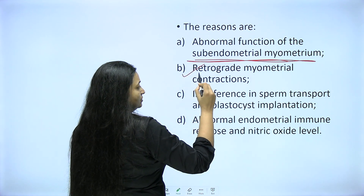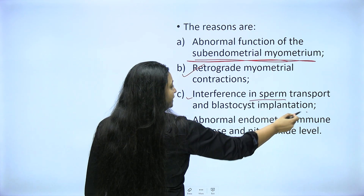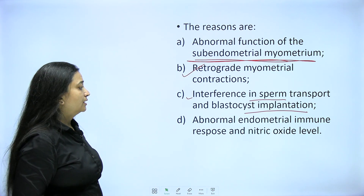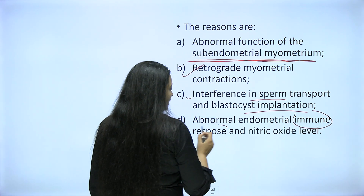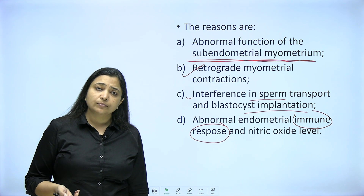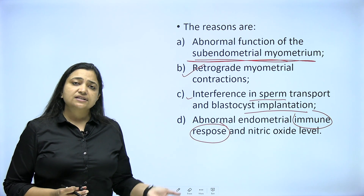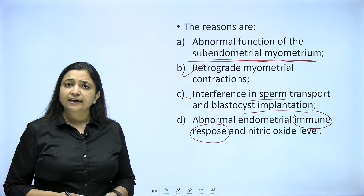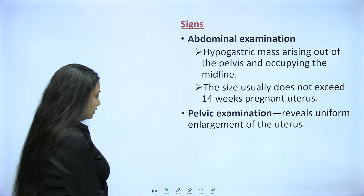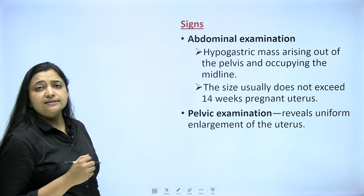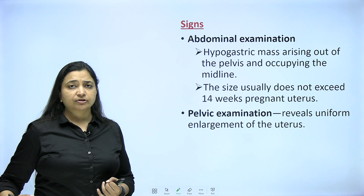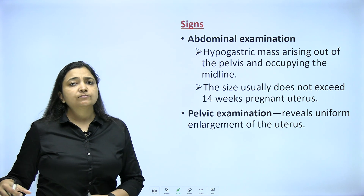Retrograde myometrial contractions interfere with sperm transport and implantation because everything is problematic — the uterus is trying to expel things out. Abnormal endometrial immune response also plays a role. The junctional zone is disturbed, probably due to genetic predisposition or immune response. With that persistent immune response, there are chances of sub-fertility, and if there is implantation it may end up in miscarriage. The classical symptoms of adenomyosis are: menorrhagia, dysmenorrhea, dyspareunia, infertility, and recurrent miscarriages.